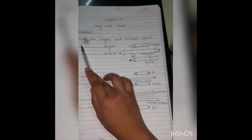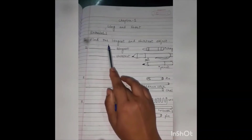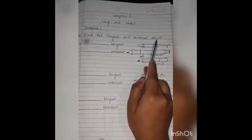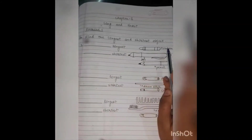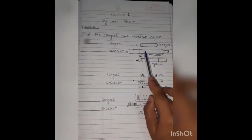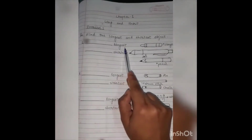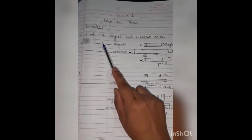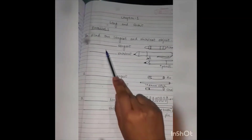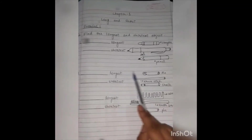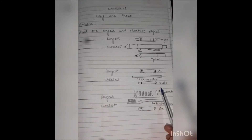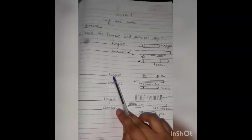अब हम exercise देखेंगे। Okay students? First of all, find the longest and the shortest object. पहले वाले में हमें बताना है कि crayon, marker color, pen, और pencil — इन में से सबसे छोटा कौन सा है और सबसे लंबा कौन सा है। Longest यहाँ लिखना है और shortest यहाँ लिखना है। दूसरे में — pin, drumstick, और chalk — इन तीनों में से बताना है कि कौन सी सबसे लंबी है और कौन सी सबसे छोटी है।